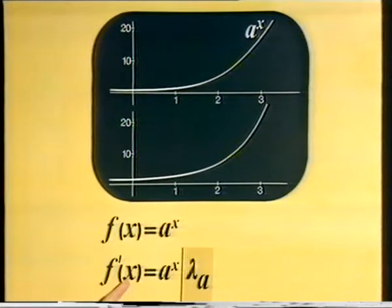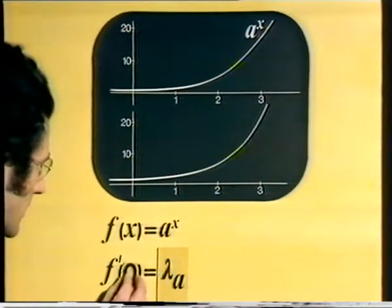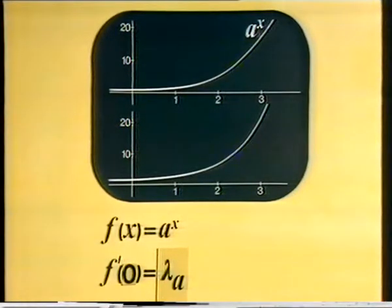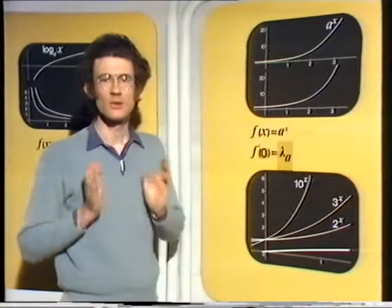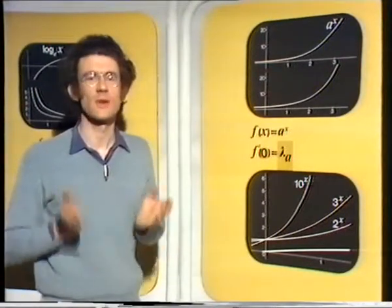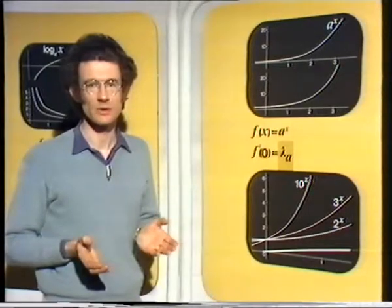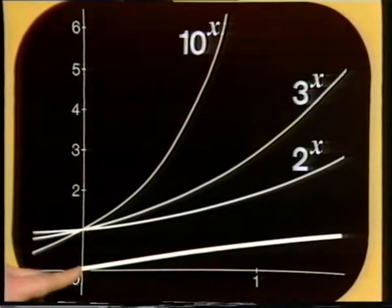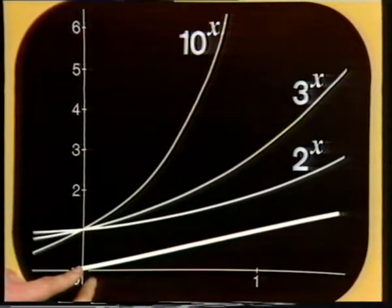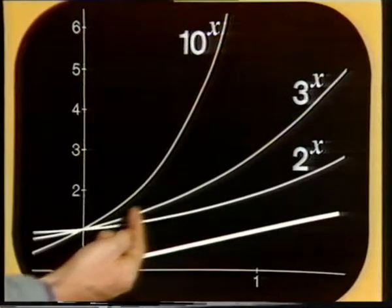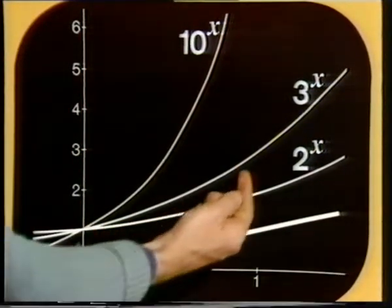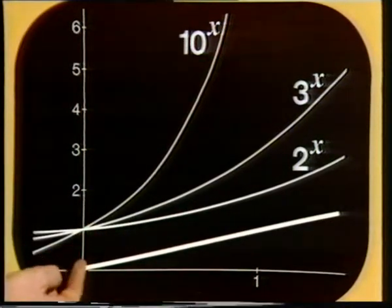Taking x equals 0 in the equation, since a to the 0 is 1, we find that f prime at 0 equals lambda a. Lambda a is the derivative of a to the x at x equals 0 — it's the slope of the tangent to that curve at x equals 0. So can we find a value of a for which the curve a to the x has slope 1 at x equals 0? Looking at curves, 2 to the x is a bit too flat and 3 to the x is a bit too steep, but surely somewhere in between there is a value of a giving slope 1 at x equals 0.